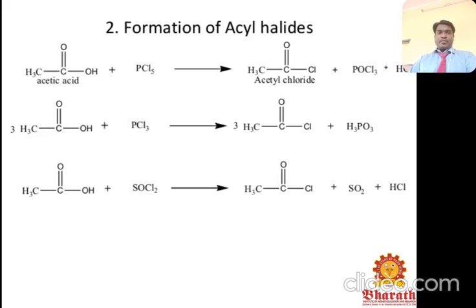Formation of acyl halides: acetic acid reacts with PCl₅ to give acetyl chloride. Acetic acid reacts with PCl₃ to give acetyl chloride. Acetic acid reacts with SOCl₂ to give acetyl chloride and HCl.